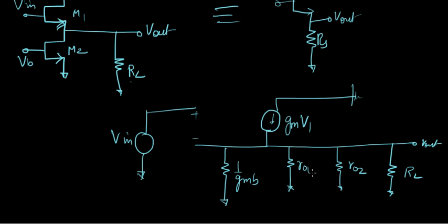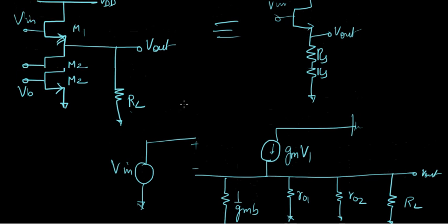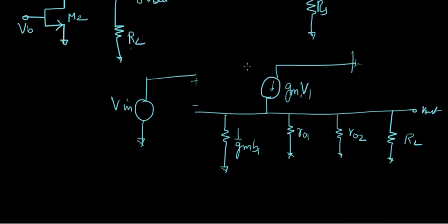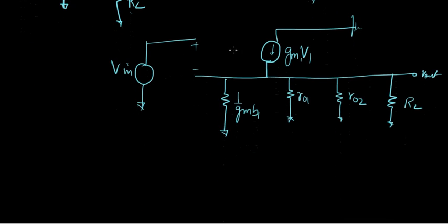Now you might start wondering where the other gm terms are, because there are two transistors here and we're just considering one. Where's the other? That's what we have to understand.